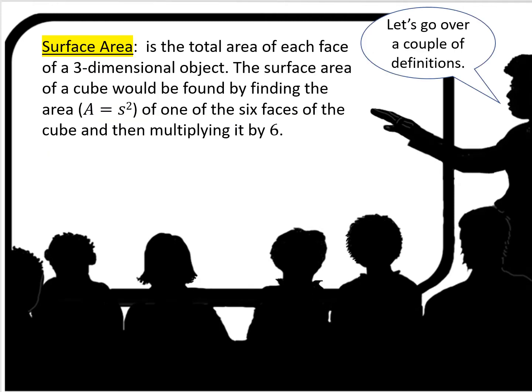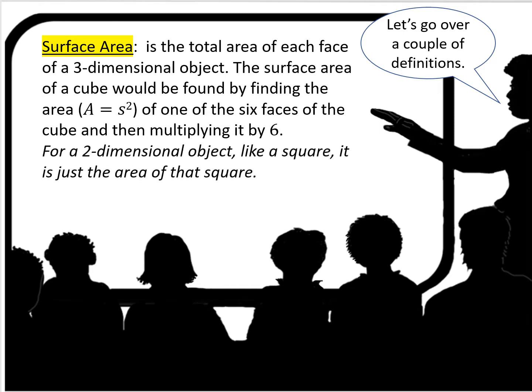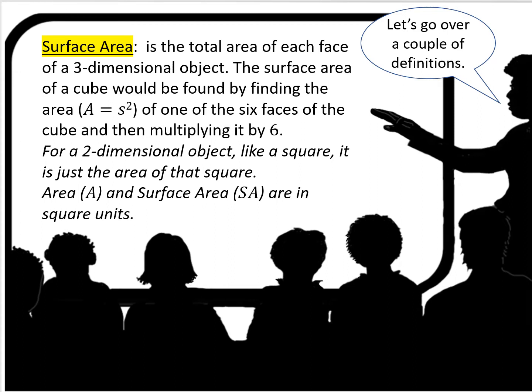Let's go over a couple of definitions. Surface area is the total area of each face of a three-dimensional object. The surface area of a cube would be found by finding the area — which is A equals side squared — of one of the six faces of the cube, and then multiplying it by six.